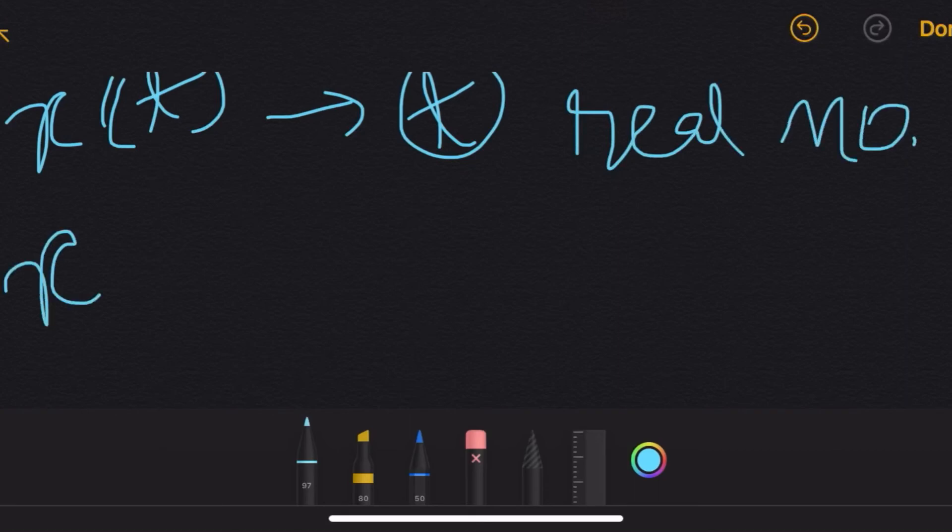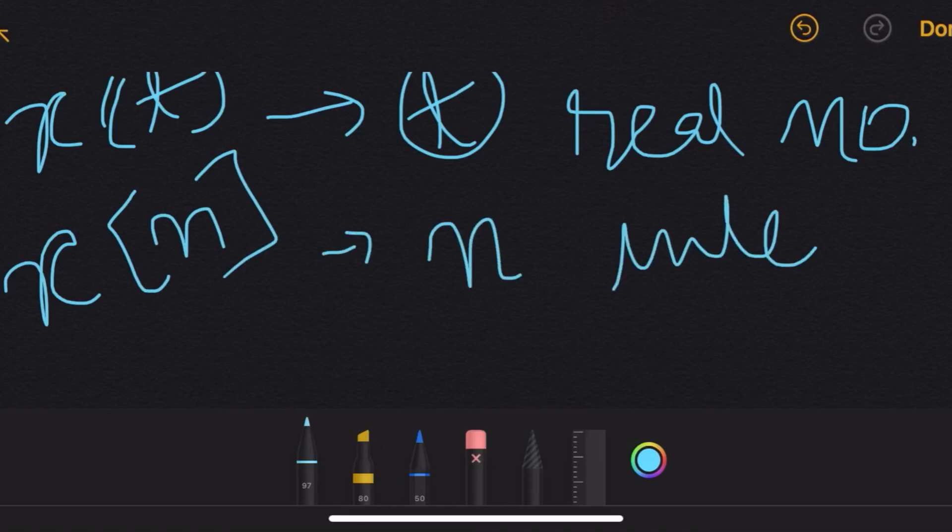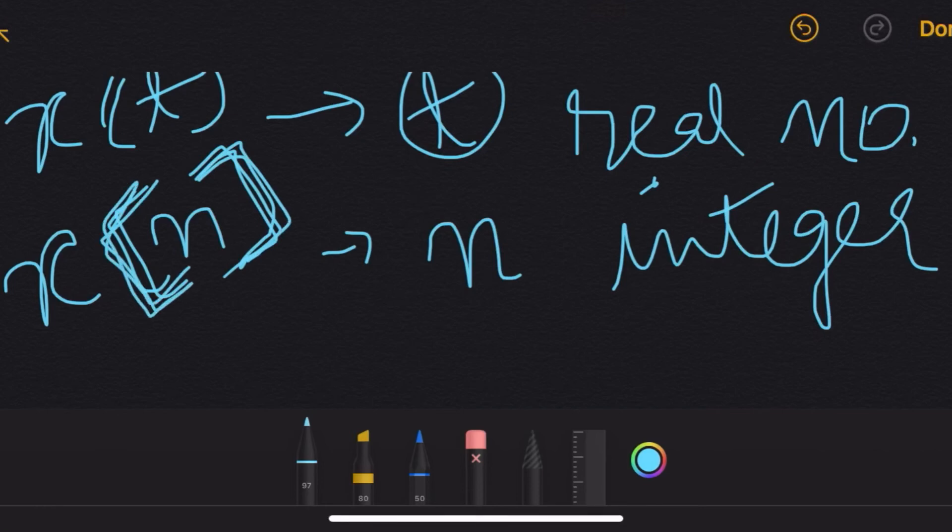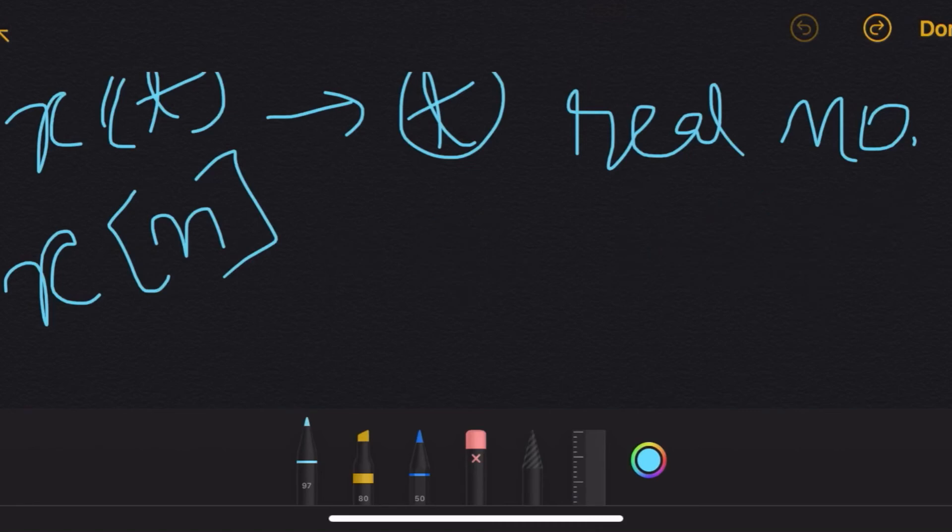Whereas x[n] is for your discrete time where n is your integer. This bracket is important. This square bracket we should use for your discrete and this t we should use for your continuous time.